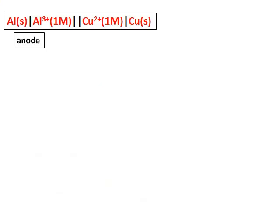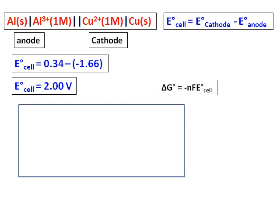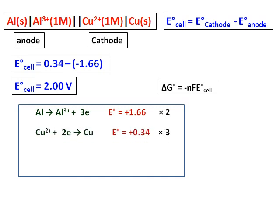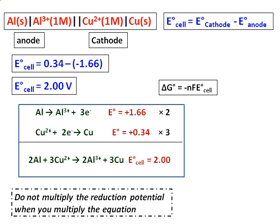Let's calculate E_cell for another cell notation — aluminum and copper. The left-hand side is always the anode; the right-hand side is the cathode. E_cell = E_cathode − E_anode. Using values from the reduction potential table, E_cell = 2 V, a positive value, so the reaction is spontaneous. When writing the half-equations, note that the electrons are not equal, so multiply the first equation by 2 and the second by 3 to balance electrons. Importantly, the reduction potentials (E° values, 1.66 V and 0.34 V) are never multiplied by those coefficients — only the equations are multiplied.